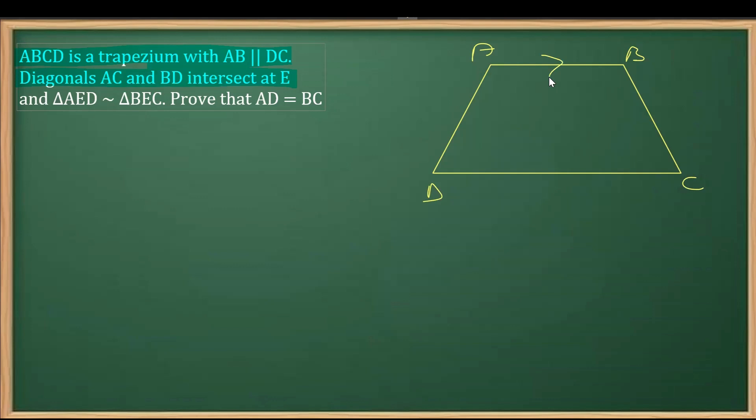Keeping in mind that AB is parallel to CD as given, I'm naming the vertices accordingly. Now we join the diagonals, which are AC and BD. One diagonal is AC and the other is BD. These diagonals are intersecting at point E, which is the point of intersection.